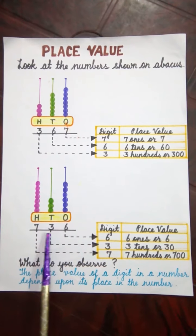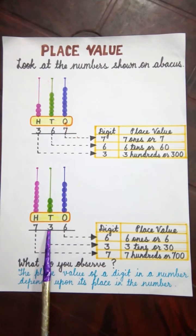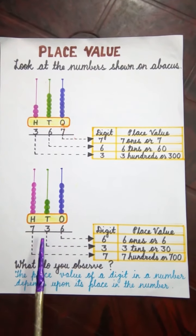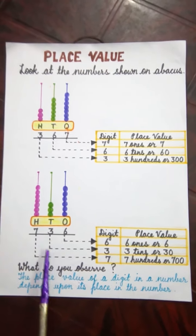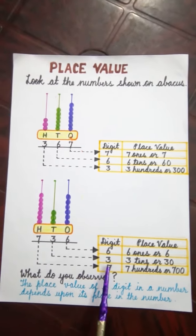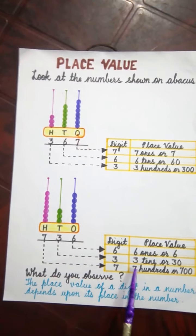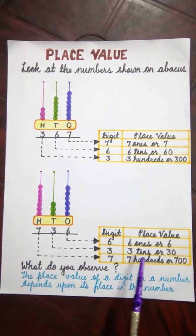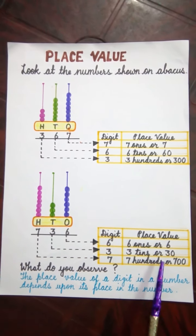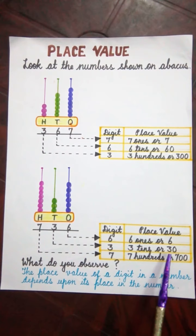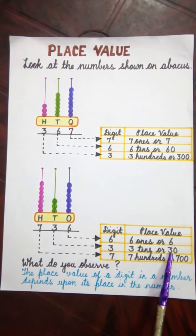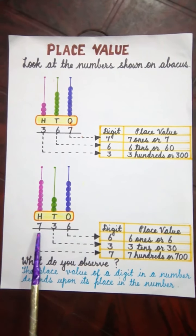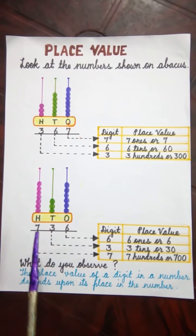Now what is the place value of 3? As 3 is in the 10's place, so the place value of 3 is 3 tens. Or we can say 3 multiplied by 10 is equal to 30.